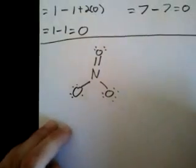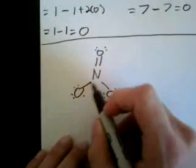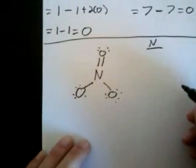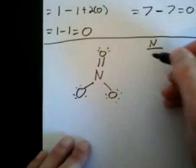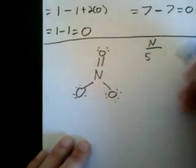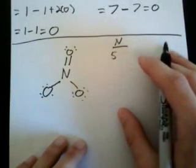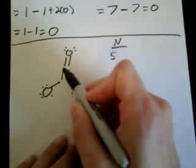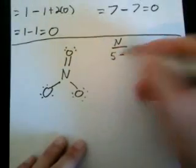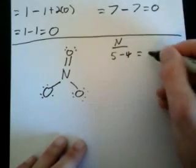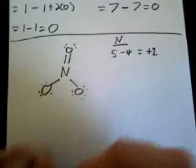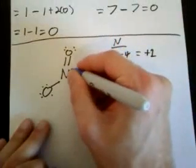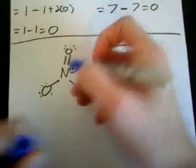Let's find the formal charge on the nitrogen atom. Nitrogen has five valence electrons. For formal electrons: two per lone pair — it has no lone pairs — and one per shared pair. It looks like nitrogen has four shared pairs. So we get five minus four, which equals positive one. We assign a formal charge of positive one to the nitrogen atom.